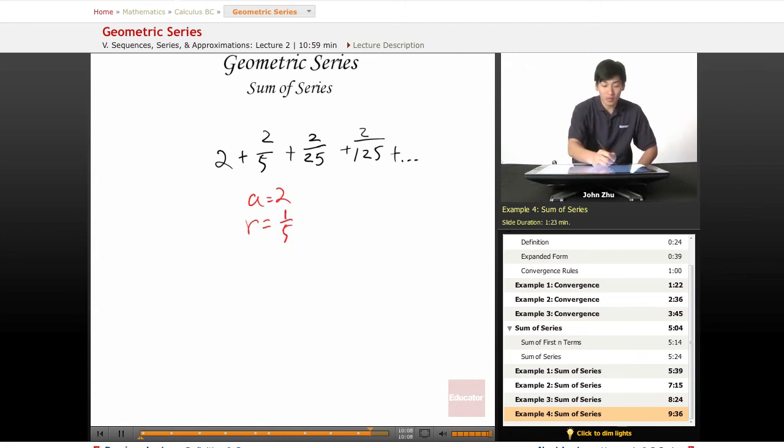And if we apply the total sum formula, we have sum equals 2 over 1 minus 1 over 5. So this equals 2.5.